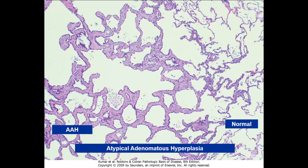Atypical adenomatous hyperplasia: if you see thickened septa with cuboidal cells lining them and the lesion is less than five millimeters, it's AAH — a precancerous but not malignant lesion. If the same pattern is more than five millimeters, the diagnosis is adenocarcinoma in situ. If it invades the basement membrane by less than five millimeters, it's minimally invasive adenocarcinoma. More than five millimeters invasion is frankly invasive adenocarcinoma.